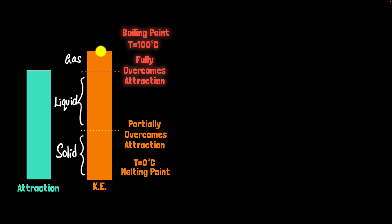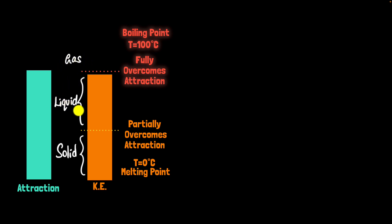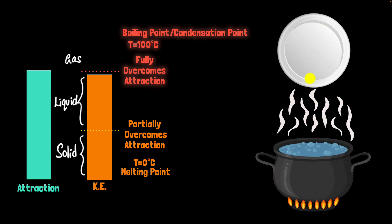Now let's reverse the whole thing — let's cool down our gas and see what happens. Again, nothing will happen to the force of attraction because it does not depend on temperature. But the kinetic energy will reduce. And eventually, when it goes below the boiling point, it will no longer be able to fully overcome the force of attraction, which means the gas will turn into liquid. We call this condensation, and this point is called the condensation point. You can clearly see the condensation point is the same as the boiling point. For example, when you hold a plate over boiling water, you see liquid drops — that's condensation. The steam has a temperature lower than the condensation point, lower than 100 degrees Celsius, so it condenses into liquid water.